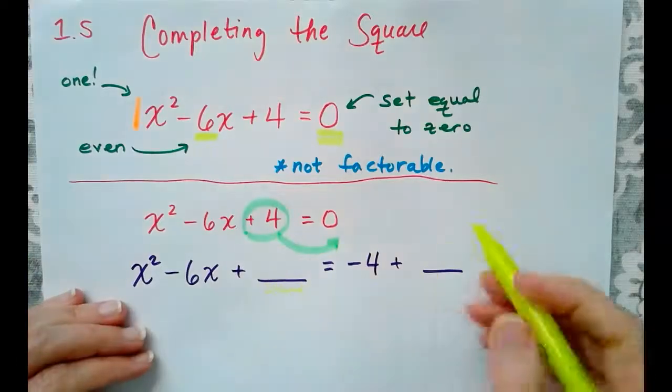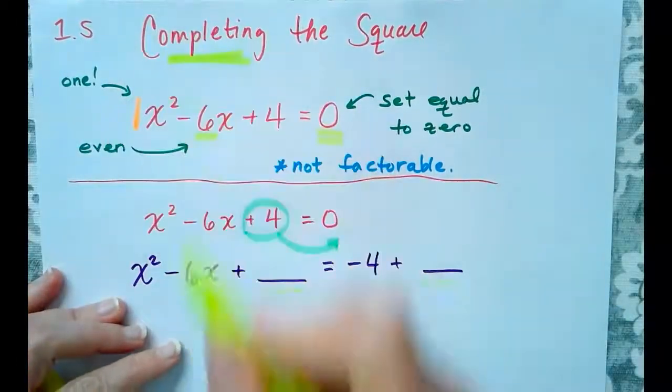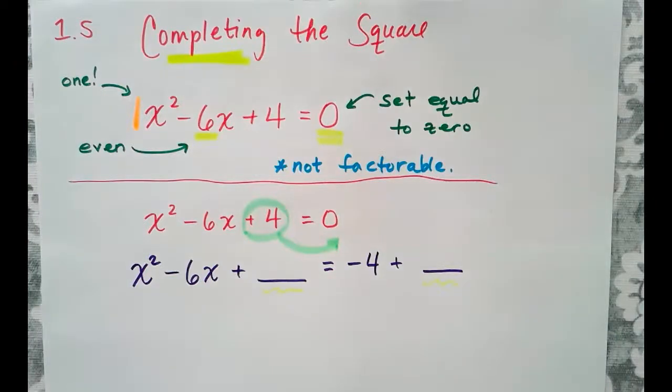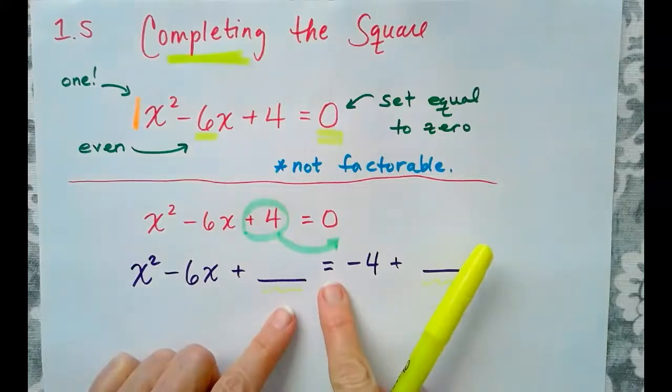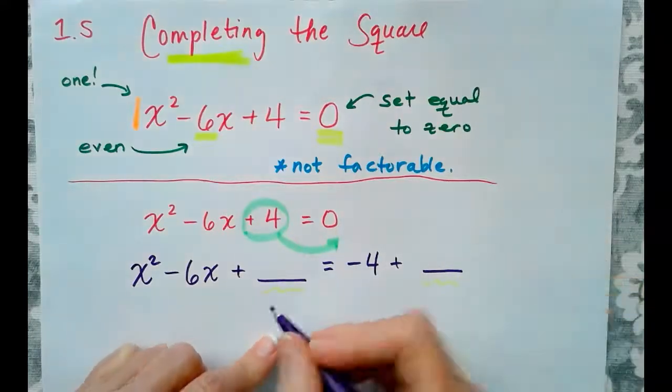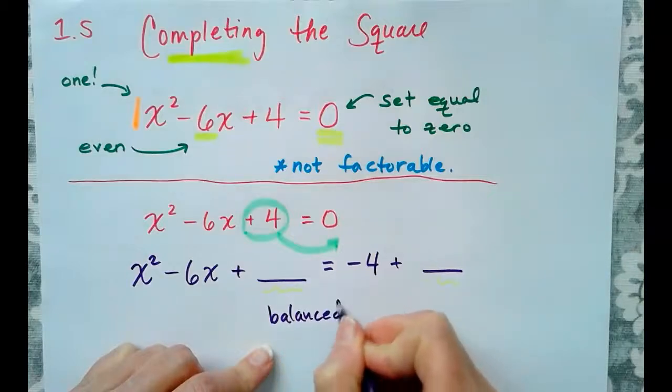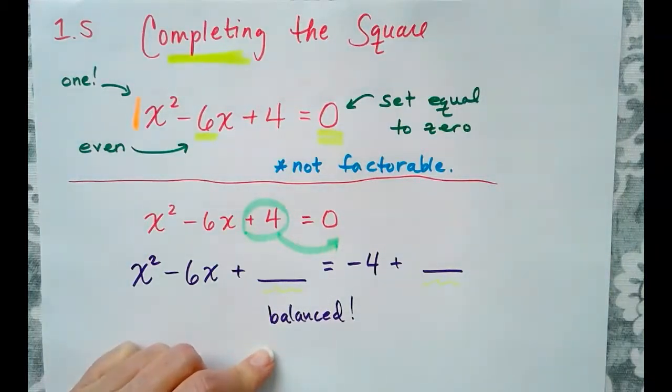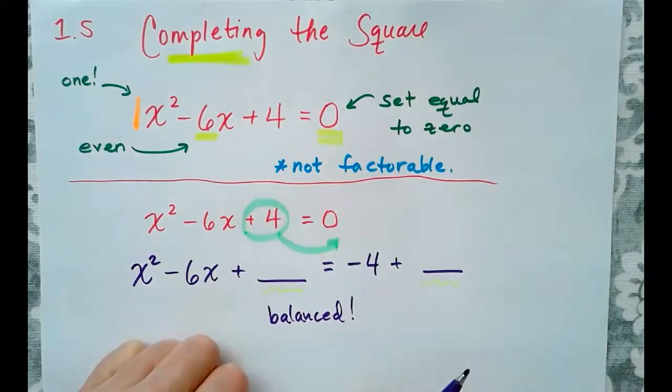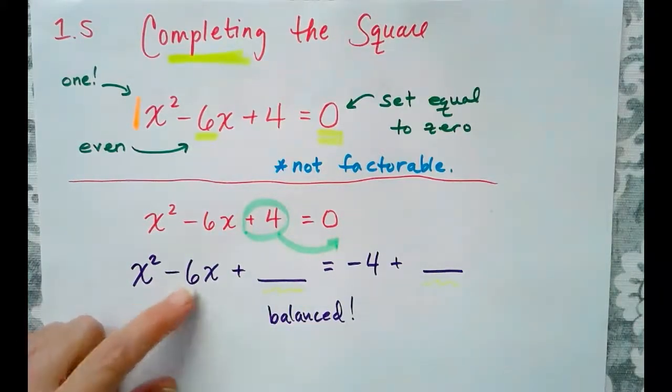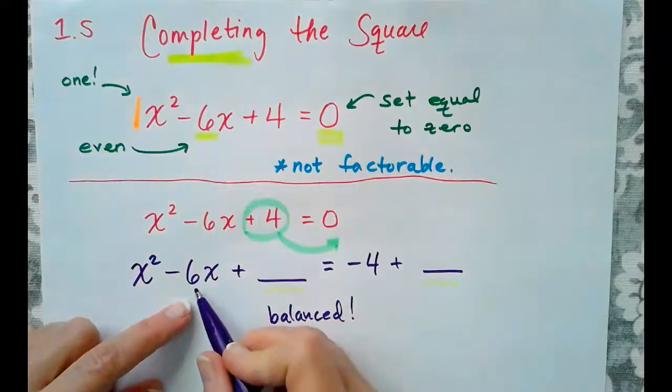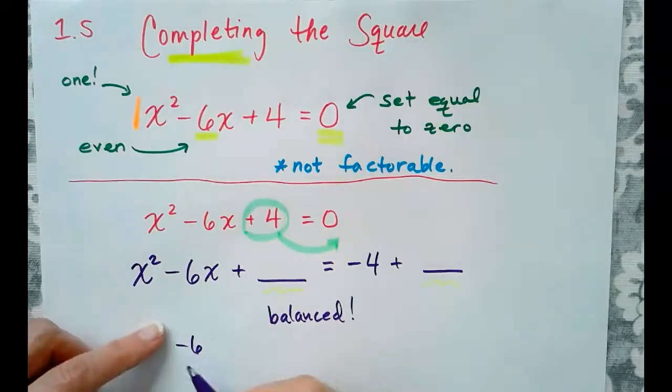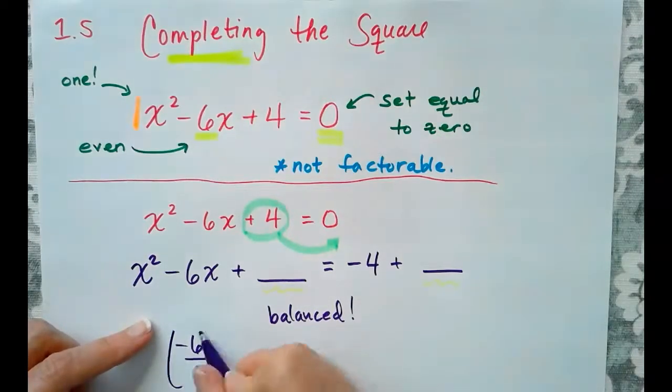Now, I'm leaving blanks here because we are going to be completing a perfect square trinomial. And also remember that this is an equation. So whatever we do on the left, we have to do on the right so that the equation will stay balanced. So how do we fill in these blanks? We go to our middle term, our linear term. So our linear coefficient is -6. We take -6 and we divide it by 2. So -6 divided by 2 is going to be -3, and we will square that number.